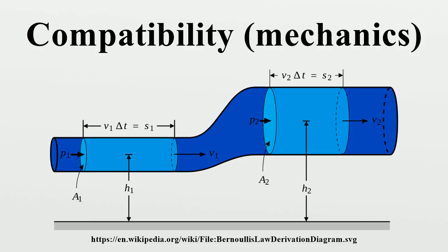The proof of sufficiency is more involved. We start with the assumption that the Riemann-Christoffel curvature vanishes and must show that there exist fields satisfying the compatibility relations. From a theorem by T.Y. Thomas, the system of equations has unique solutions over simply connected domains. Hence the assumed condition gives a unique continuous field. Since the body is simply connected, there exists a solution to the equations, and we can show that the constructed tensor field satisfies the required expression, with the tensor field being invertible.